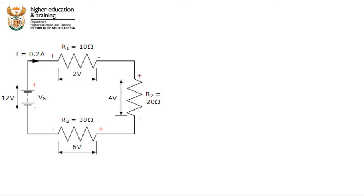So we've got a circuit over here. We've got a 12 volt supply and we've got three resistors in series: a 10 ohm resistor, a 20 ohm resistor, and a 30 ohm resistor. We've noted that the current through the circuit is 0.2 amps and that the voltage drop across R1, the 10 ohm resistor, is 2 volts. The voltage drop across the 20 ohm resistor R2 is 4 volts, and R3, the 30 ohm resistor, has a voltage drop across it of 6 volts.